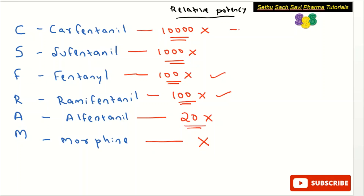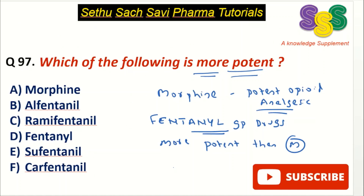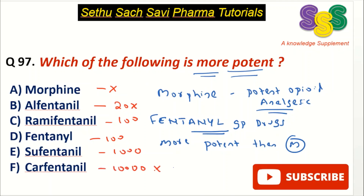Among the Fentanyl group, the most potent is Carfentanil — it is 10,000 times more potent compared to Morphine. Coming back to our question, the correct answer is choice F: Carfentanil, which is the most potent drug in the Fentanyl group. Thank you.